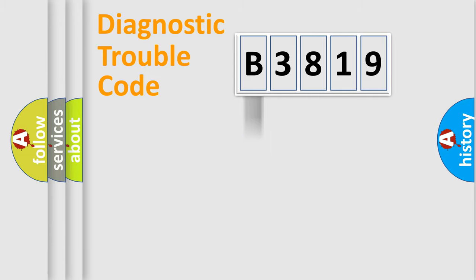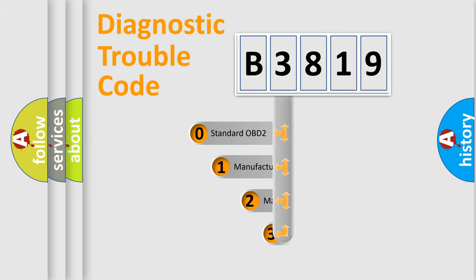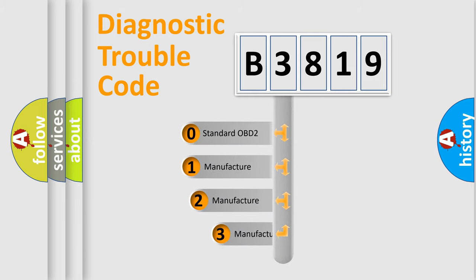The four units are: Powertrain, Body, Chassis, and Network. This distribution is defined in the first character of the code.